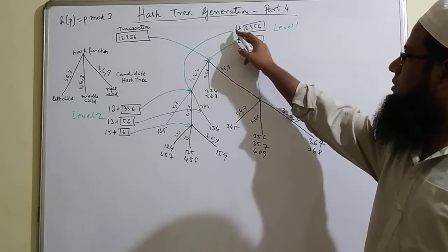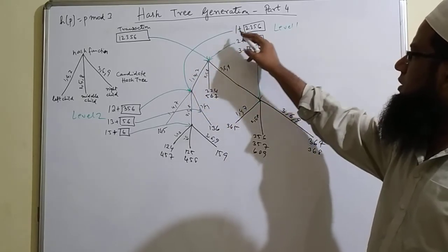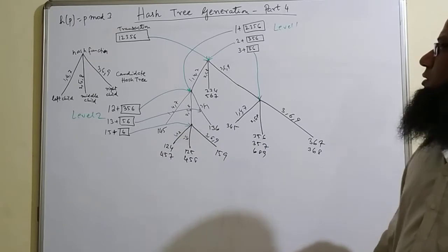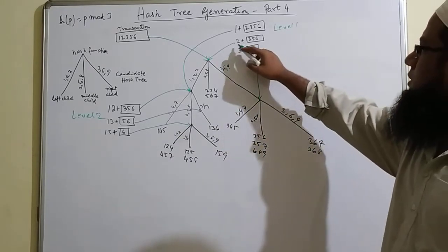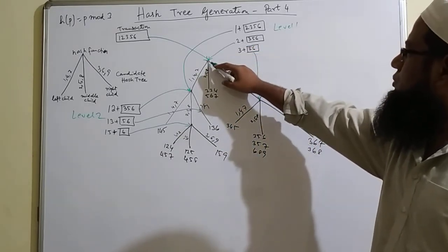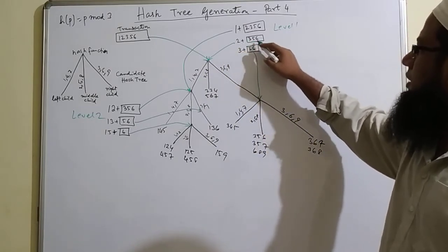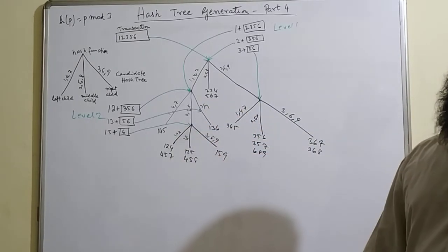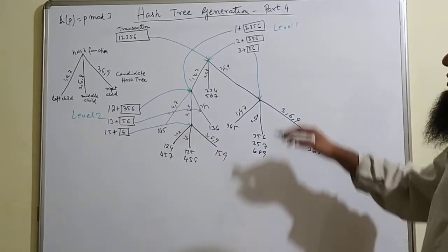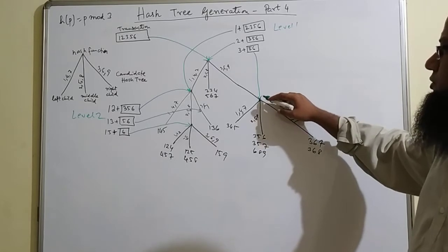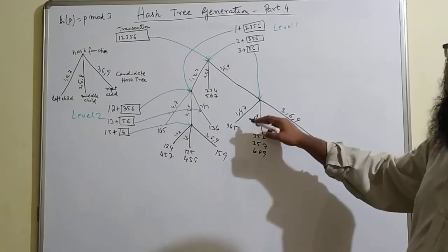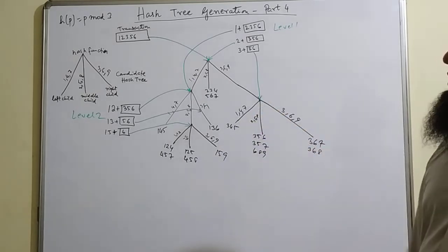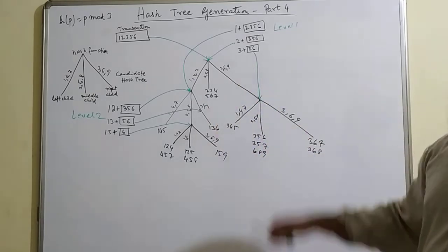Whenever any combination of the first item with these items can be traversed through this point. Similarly, 2 plus is hashed to this point, so any combination with 2, 3, 5 or 2, 5, 6 — those candidate items can be found from this point. Again, 3 plus is hashed here so that all the combinations of candidate items starting with 3 can be found from this point. That is level 1 hashing done.